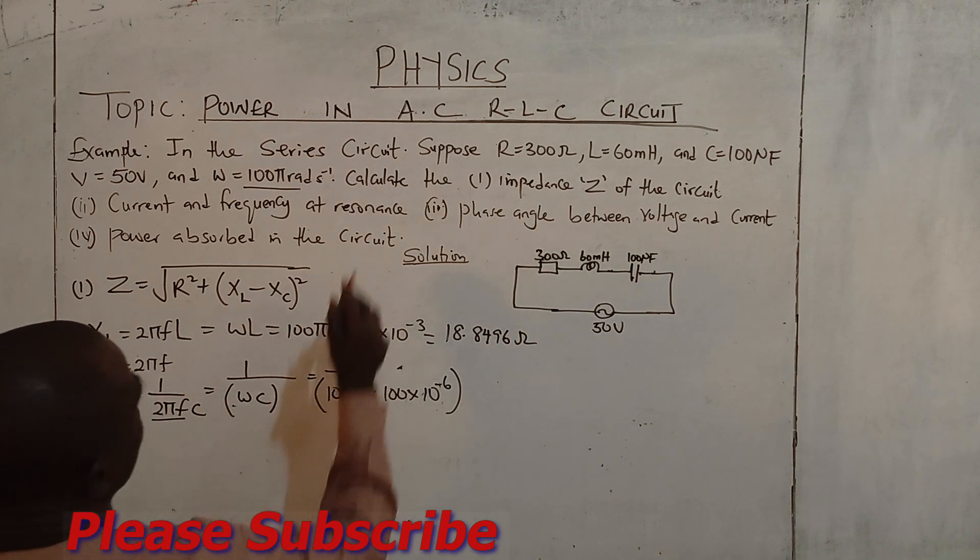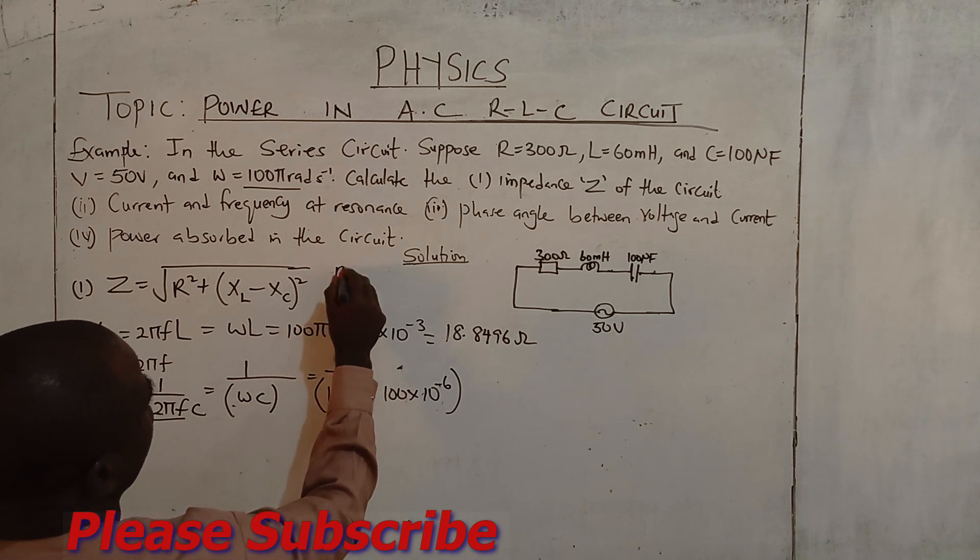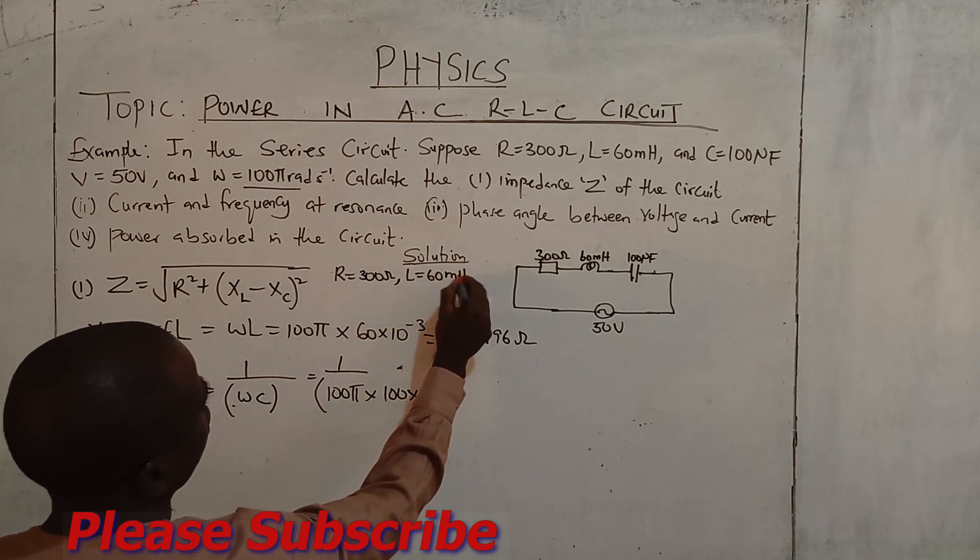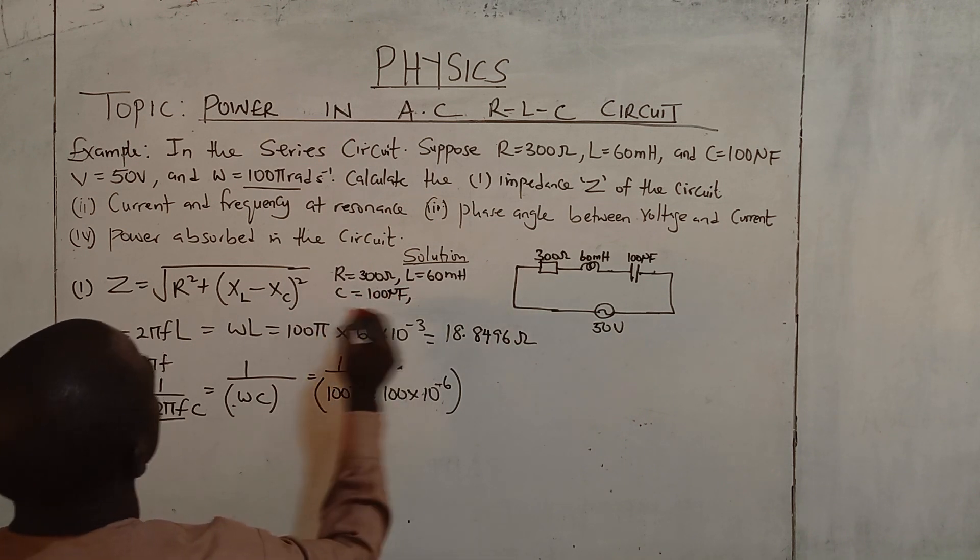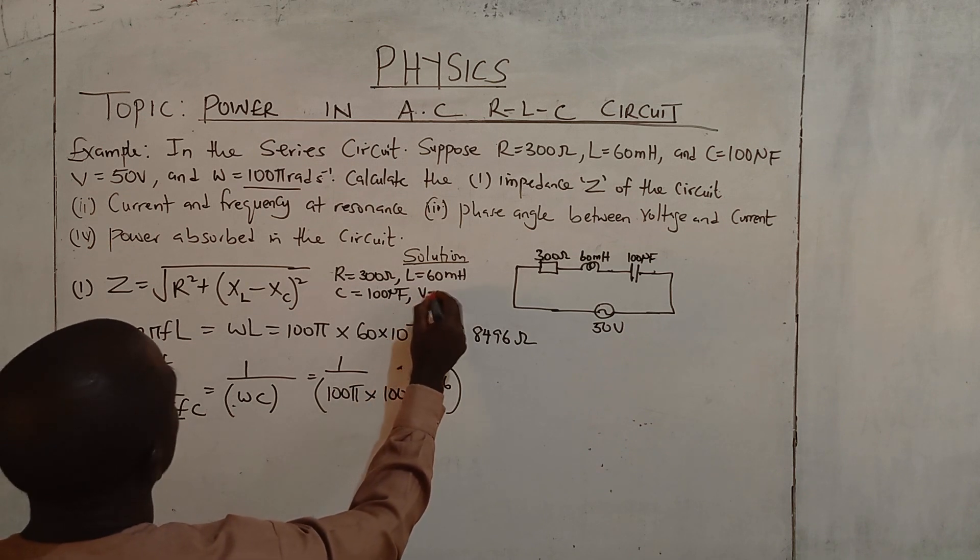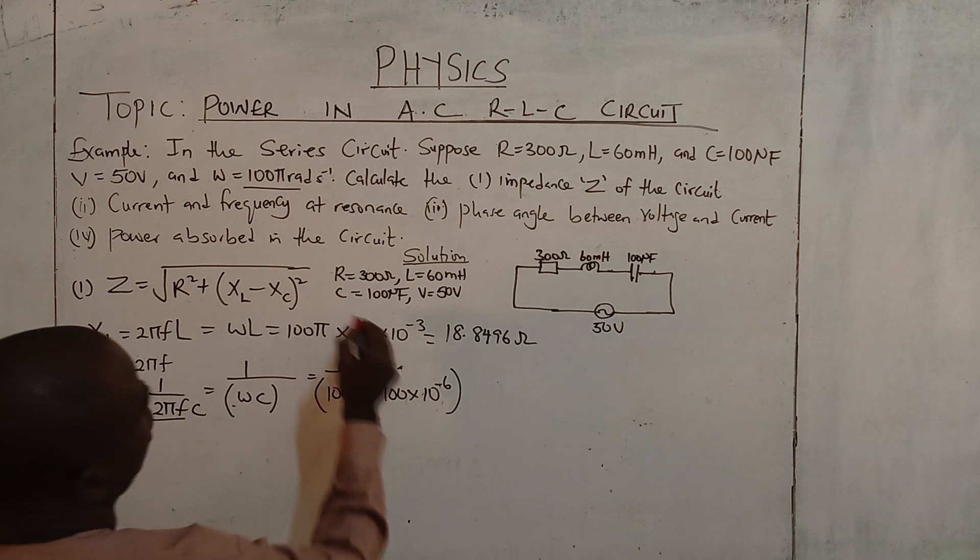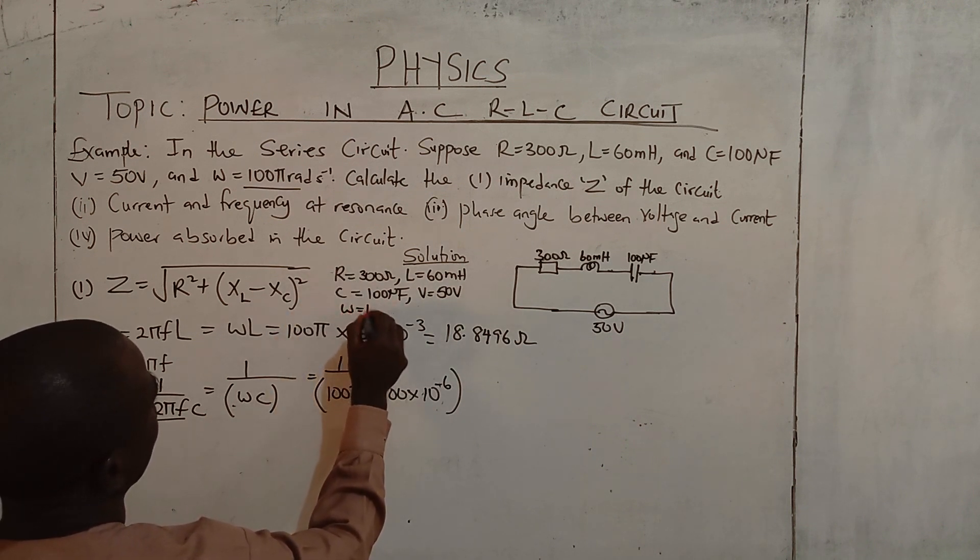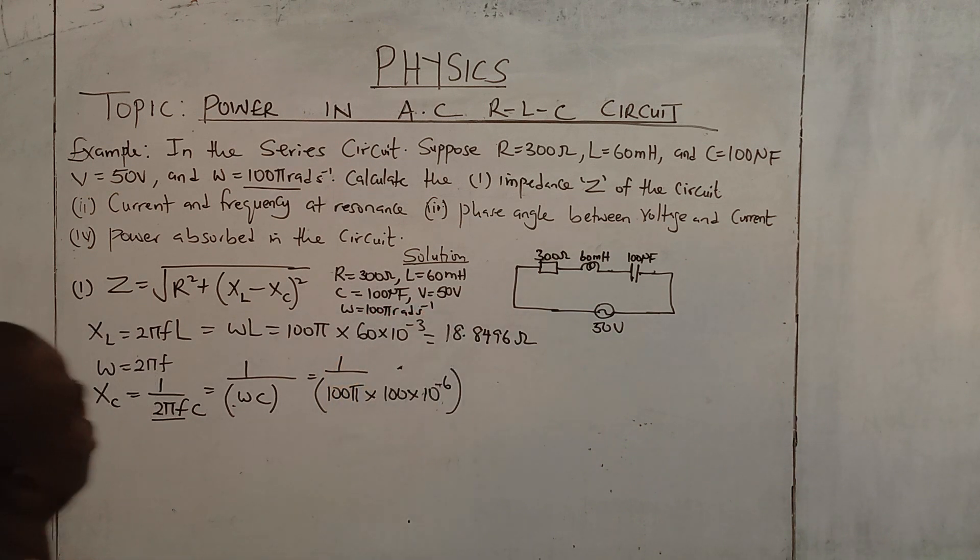For easy understanding, it is good to write the parameters for solving. Now R equals 300 ohms, L equals 60 millihenry, C equals 100 microfarad. The source voltage is 50 volts. We are given ω to the 100π radians per second. These are the parameters.